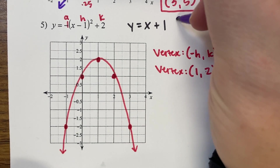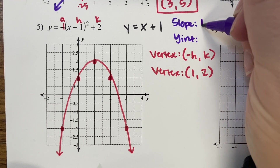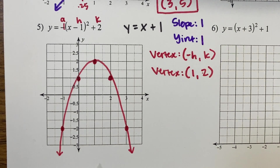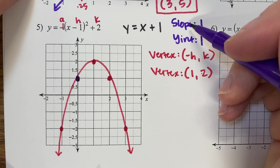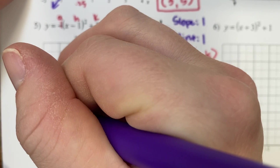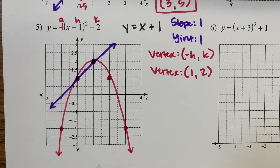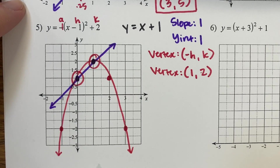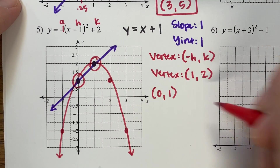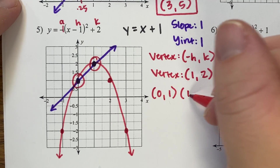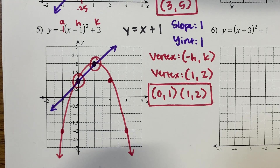There's our quadratic. Now graph the linear. We can identify slope and y-intercept: slope is positive 1, right in front of x, and y-intercept is also positive 1. Start with the y-intercept at positive 1 on the y-axis, then use slope up 1 over 1. We can automatically see where the two functions intersect. Our two solutions are 0, 1 and 1, 2. Remember, the graph is not the answer — the graph is how we get the answer.